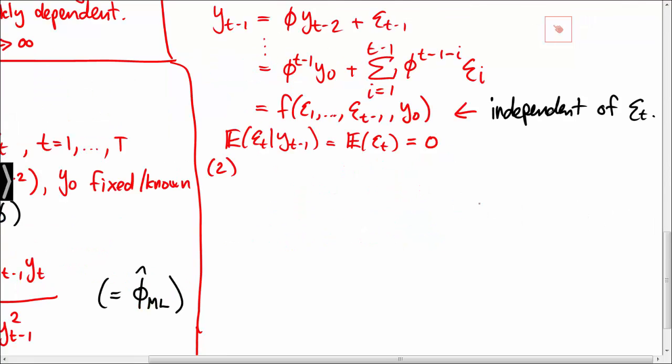Next, we turn to condition 2 stating that the regressors should not be perfectly multicollinear. So we just need to show that yt minus 1 squared is non-singular. And that is indeed the case if the expectation of yt minus 1 squared is positive and finite.